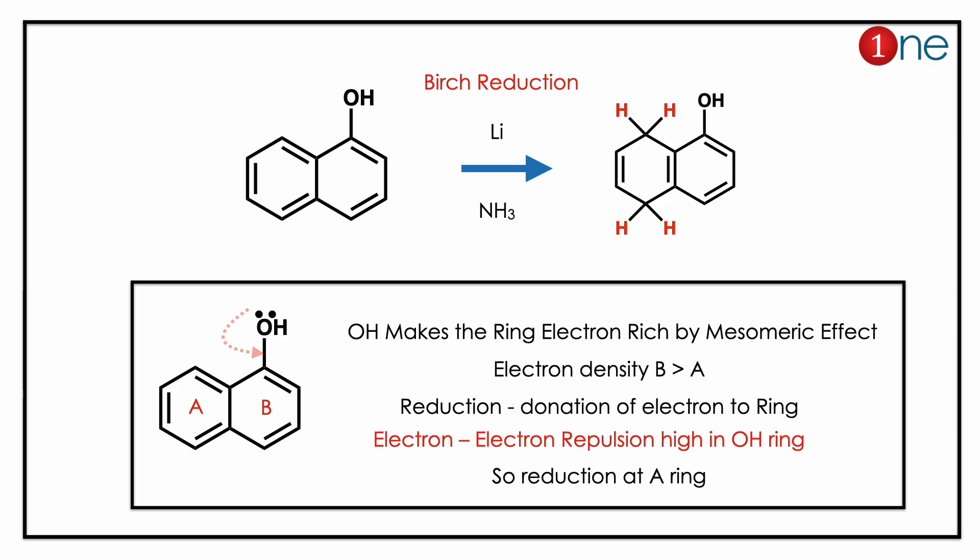The final product is now determined. The key concept to learn here is that electron density decides the site of Birch reduction. The reaction occurs at the ring with higher electron density.